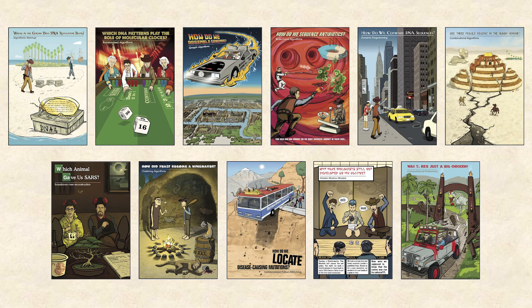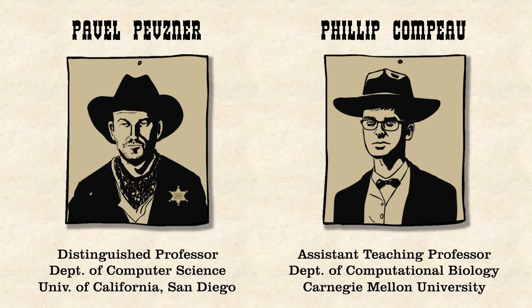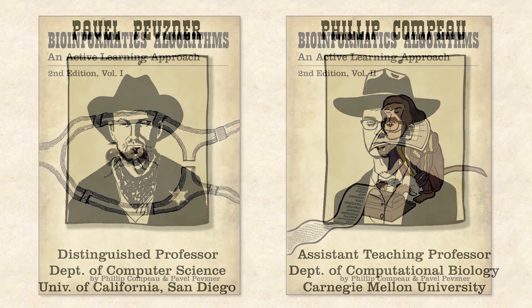Dr. Pavel Pevsner is a distinguished professor of computer science at the University of California San Diego and a leading authority on bioinformatics. He's dressed this way because he sometimes thinks that he's a sheriff of bioinformatics, a frontier discipline underpinning the digital revolution in biology and personalized medicine. Dr. Philip Compeau is an assistant professor of computer science at Carnegie Mellon University. To learn why he is dressed this way, you'll need to take this course or read the textbook, Bioinformatics Algorithms: An Active Learning Approach, co-authored by the two speakers.